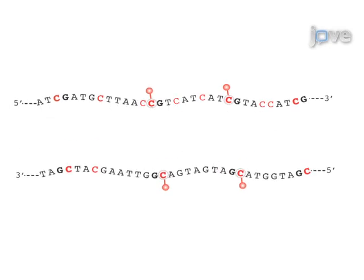This is accomplished by first denaturing the double-stranded DNA so that the bisulfite conversion reaction can take place.